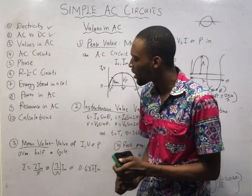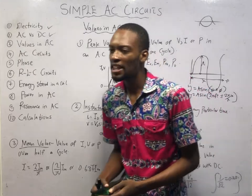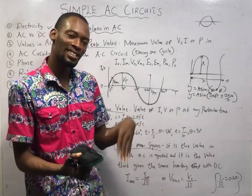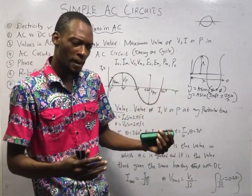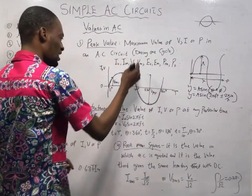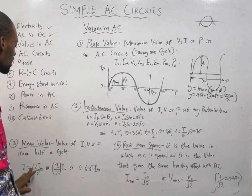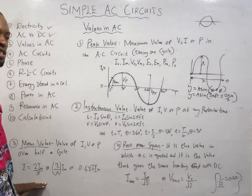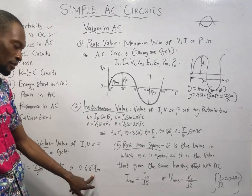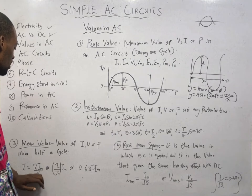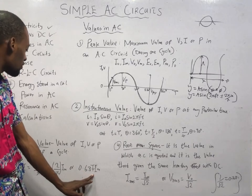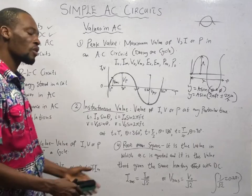The mean value or average value is simply the value of current, voltage, or power over a half cycle. The mean value of current is 2 times the maximum value of current divided by π — that is 2/3.142 = 0.637. So mean value of current is 2I_m/π or 0.637 I_m. The same applies to voltage or power.